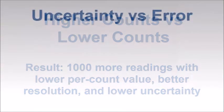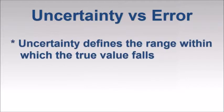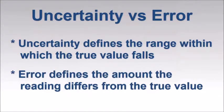Before leaving this topic, we should point out the difference between uncertainty and error. Although the terms are sometimes used interchangeably, uncertainty represents the range within which the true measurement falls, while error defines the absolute amount that reading differs from the true value.